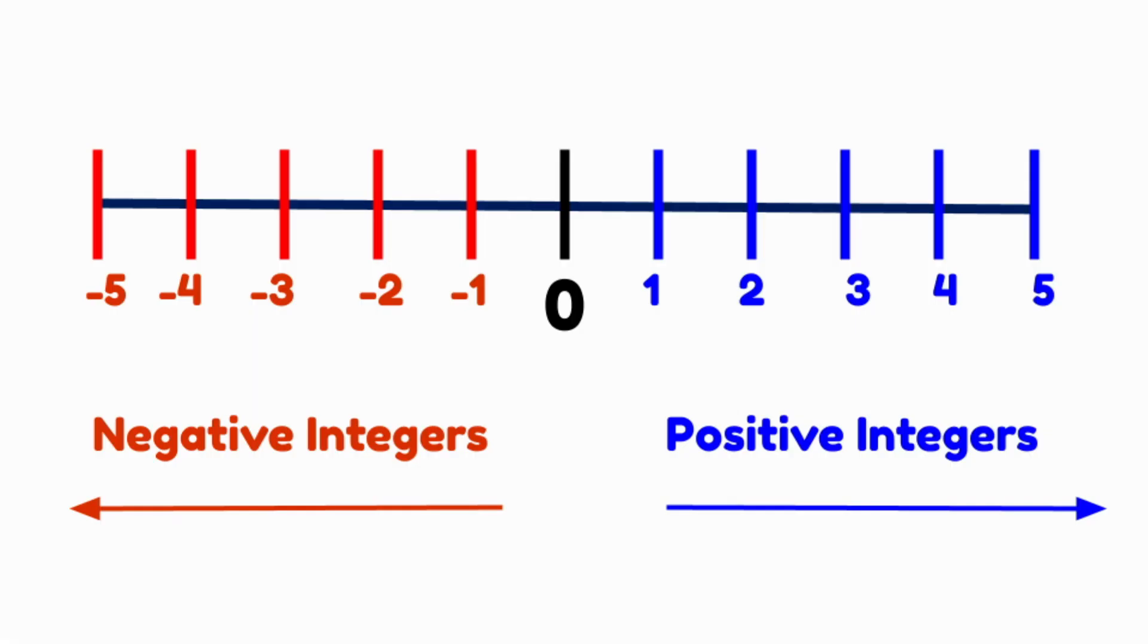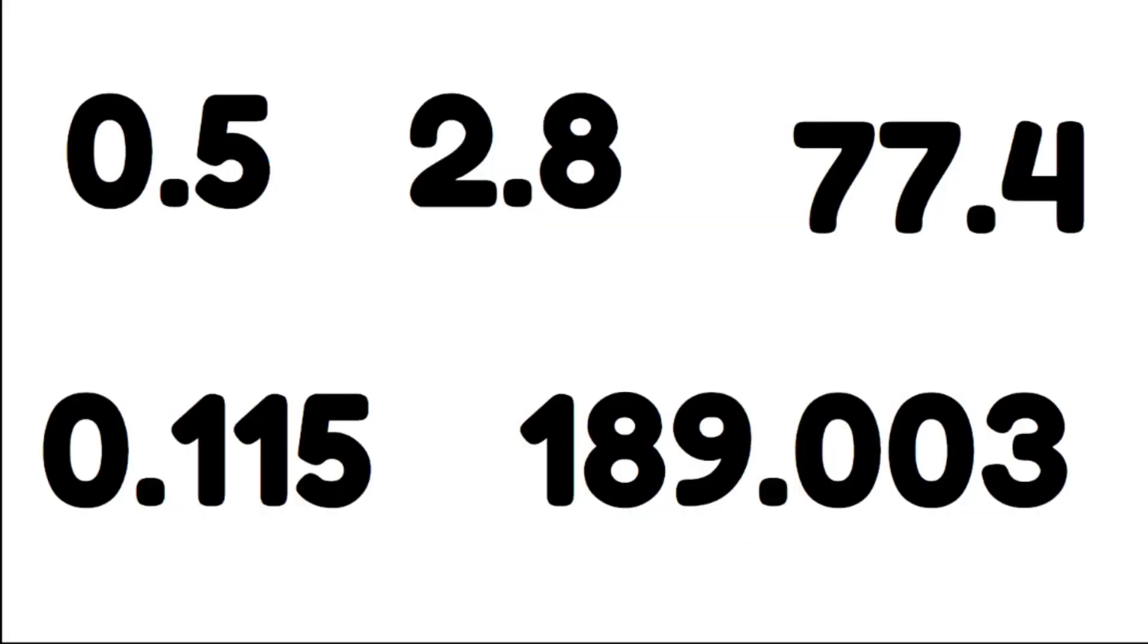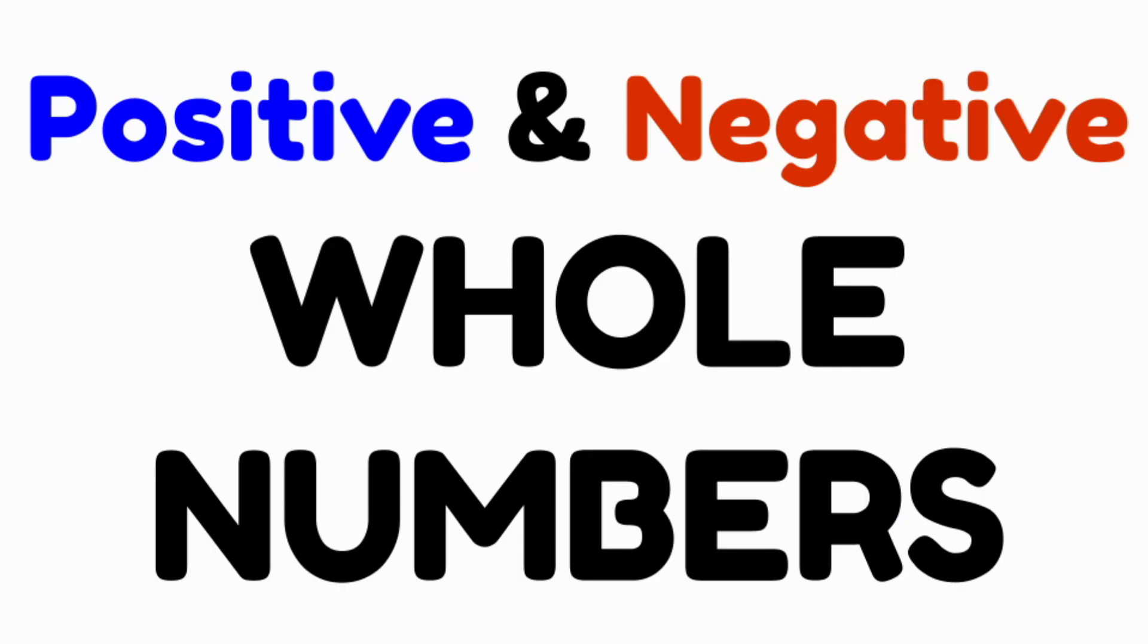So basically an integer is any whole number that can either be positive or negative. Is a fraction an integer? No. Is a decimal an integer? Definitely not. Positive and negative whole numbers are what we call integers.